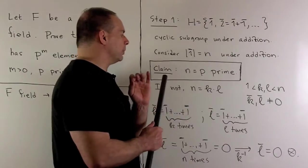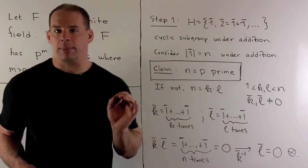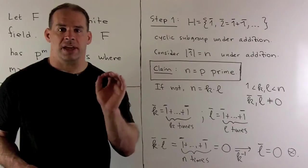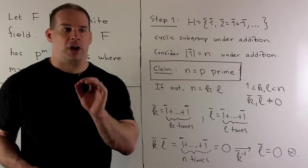Now, the claim is going to be that n is a prime number p. So, to see this, suppose we can factor n.